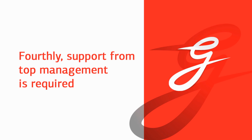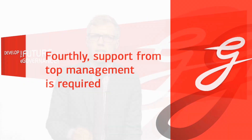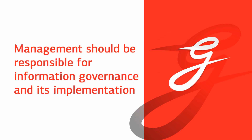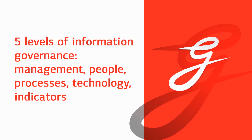The fourth aspect to keep in mind is that you need support from top management. Preferably, top management should take responsibility for information governance implementation and take the lead in implementing it. Other than that, information governance is a typical strategy — it has five levels: management, people, processes, technology, and indicators.